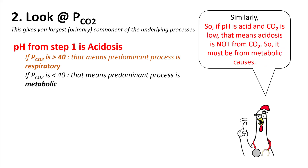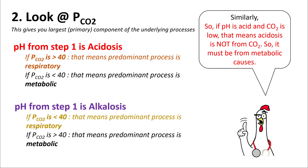If pCO2 is less than 40 and pH is acidic, that means CO2 is not the reason for the acidosis — it is metabolic causes driving it. Similarly, if pH is alkalosis and pCO2 is less than 40, the predominant process is respiratory alkalosis. If pCO2 is more than 40 with alkalosis, the predominant process is metabolic alkalosis.